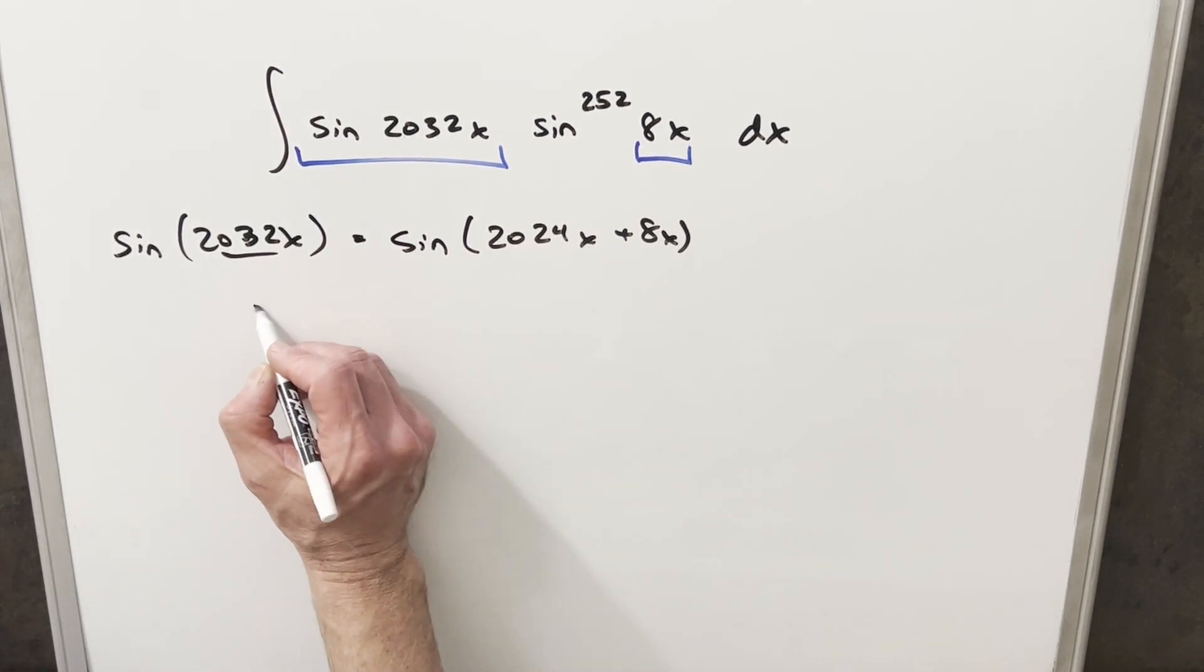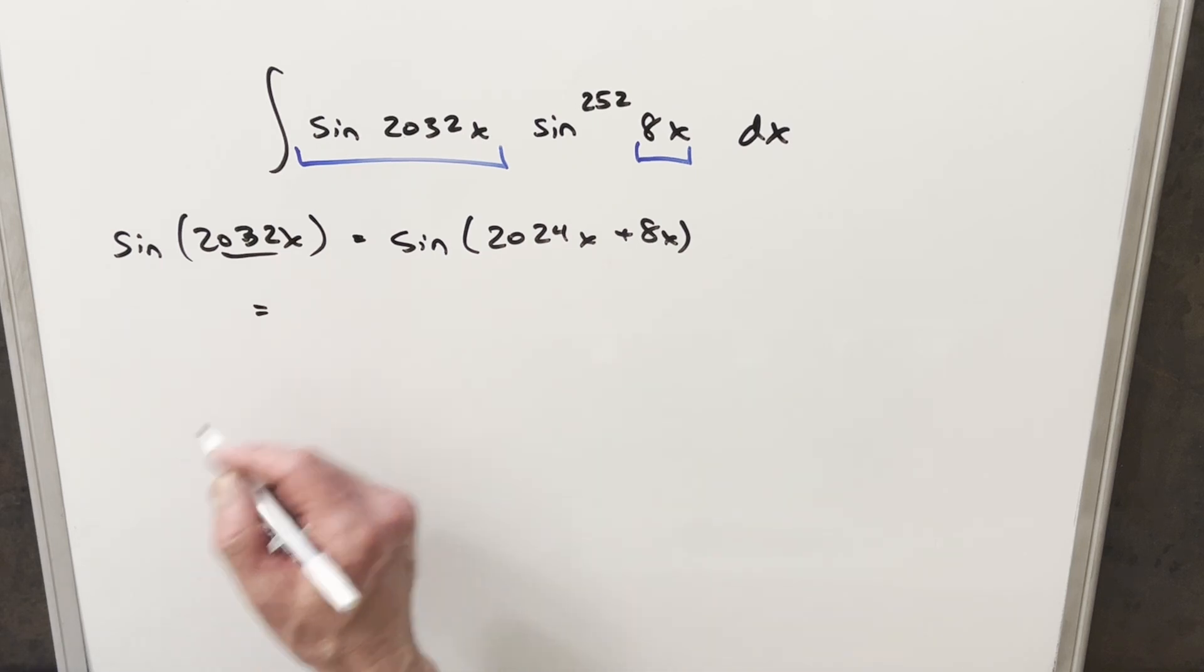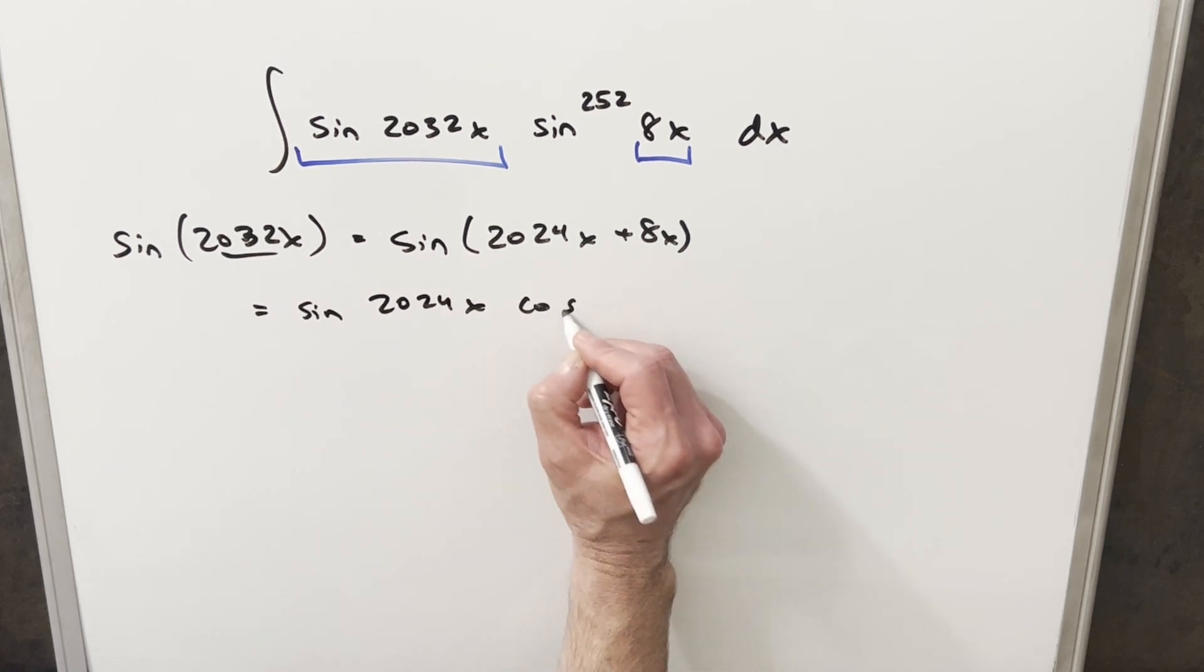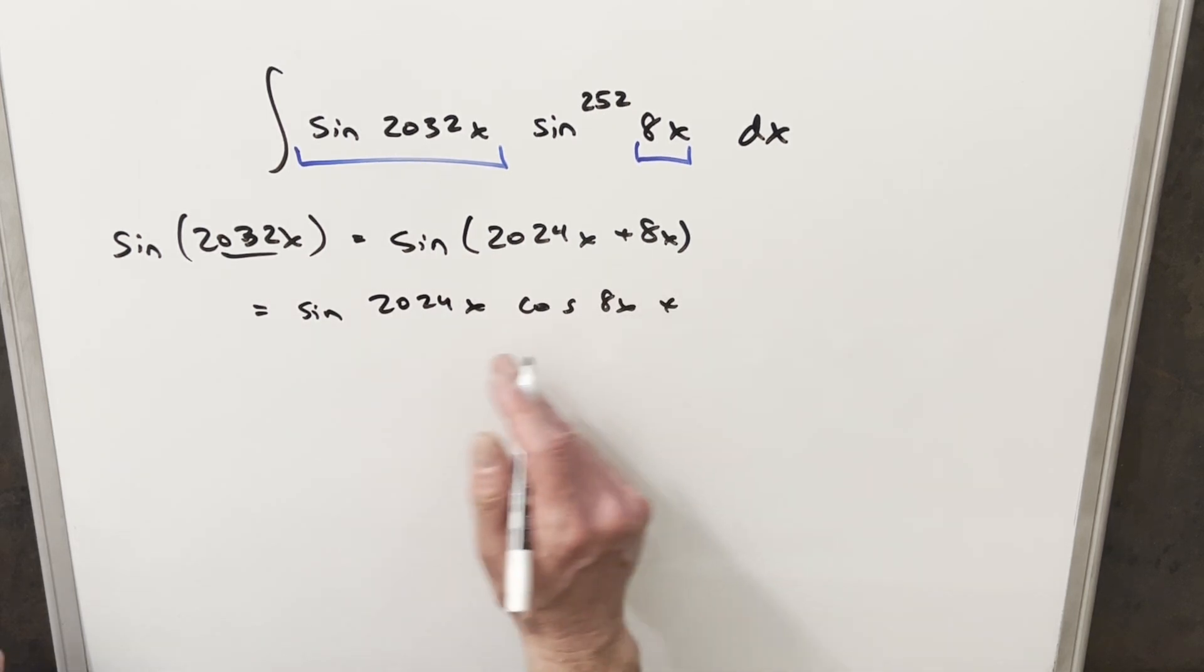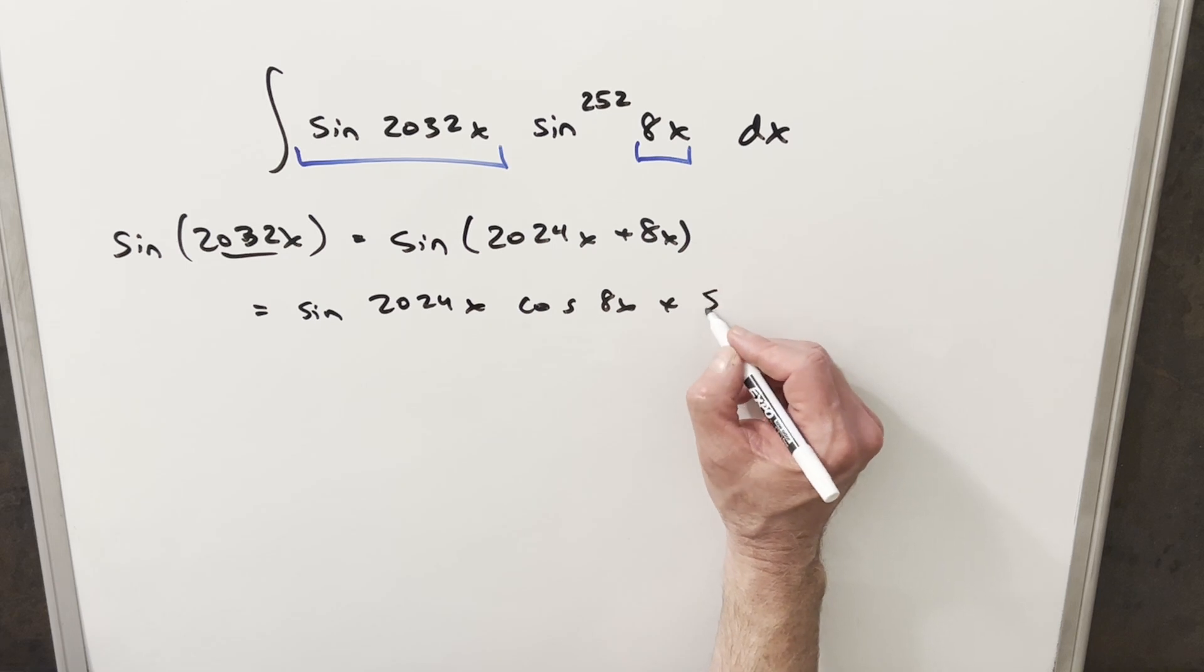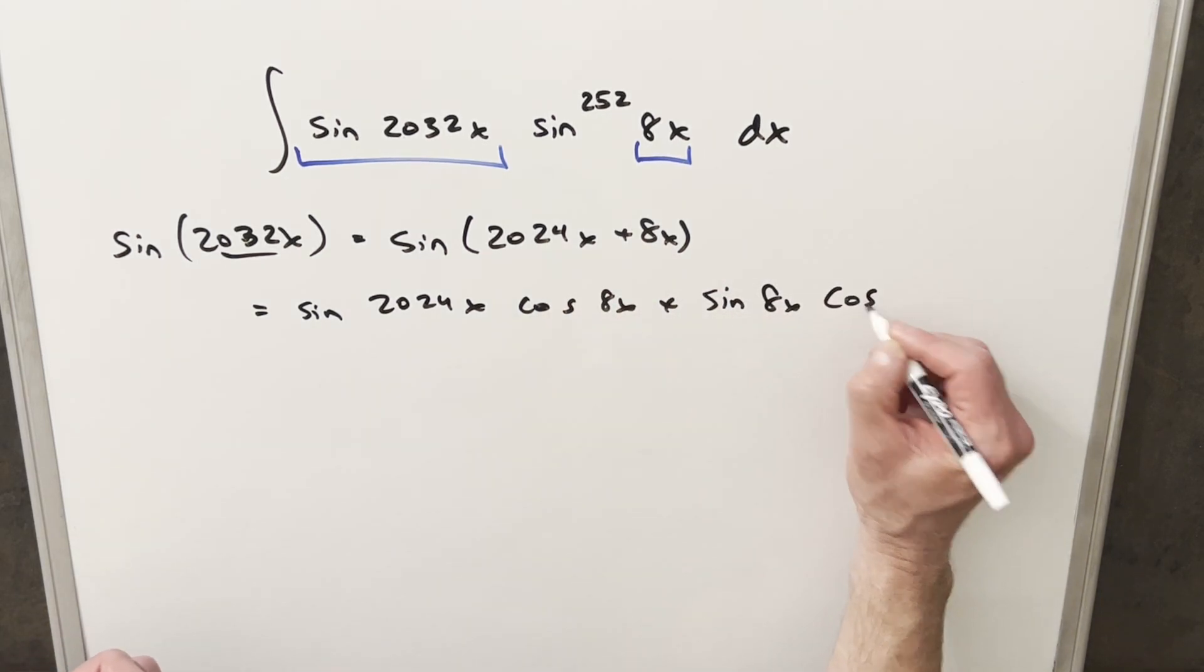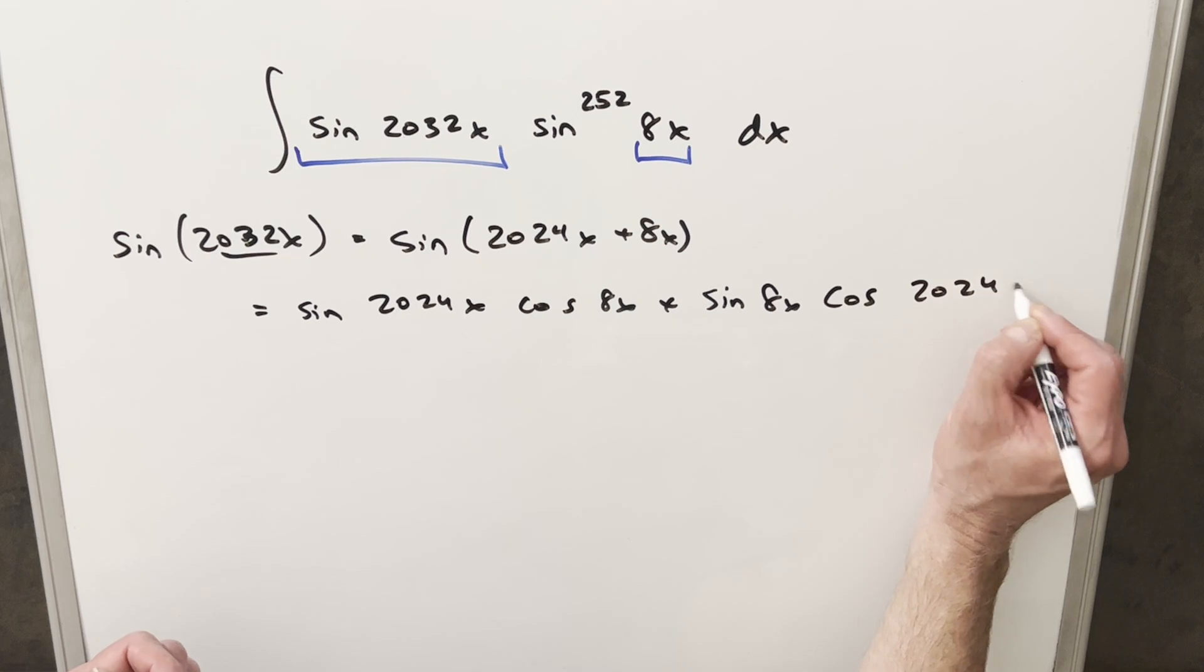And then on this piece here, what I can do is use the angle sum formula for sine so that I can rewrite this using sine of the first piece, sin(2024x), and then we'll take cosine of this, cos(8x). And then for the second part, we just reverse everything. So we're going to have sin(8x), and then cosine is going to be the other piece, cos(2024x).